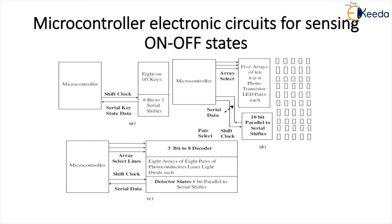So far we have seen digital sensors, sensing of on and off states and their applications, microcontroller electronic circuits for street light environment, rotating wheel, sensing linear motion of a shaft, and sensing a set of on and off states with the help of examples. Thank you for watching.